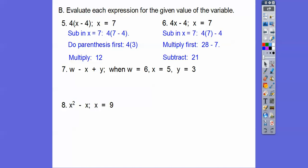This next one, we're going to plug in w equals 6, x equals 5, and y equals 3. So 6 - 5 + 3. Order of operations says we do subtraction and addition at the same time, whatever happens from left to right. So 6 minus 5 is 1, and then 1 plus 3 is 4.